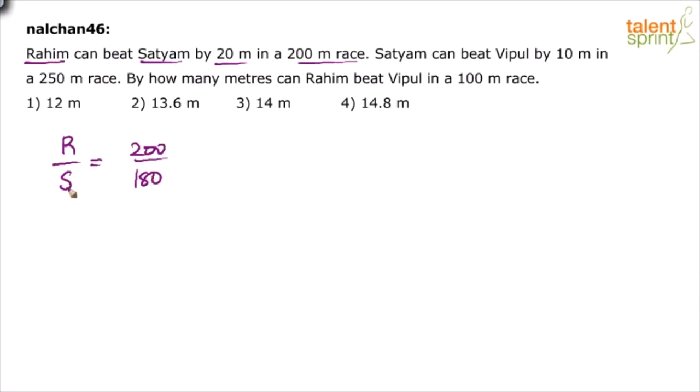So when Satyam is at 180 meters, Raheem is at 200 meters. The ratio of Raheem to Satyam comes out to be 10 by 9.